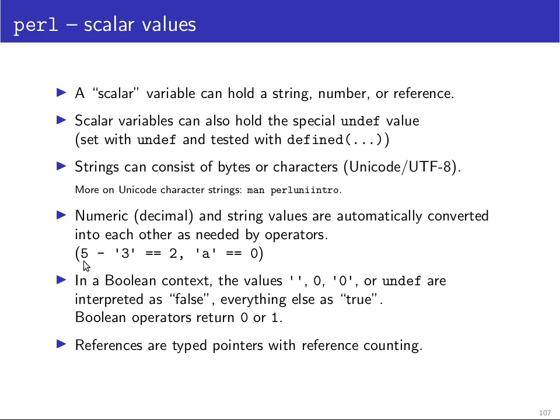You can do things like five minus the string three will have the integer value two or you can, for example, associate. If there is a string that doesn't start with any digits, then the numeric integer or float value of that string will automatically be taken as zero.